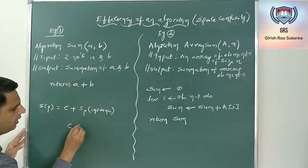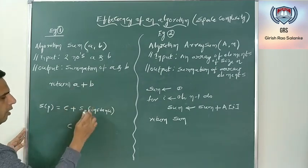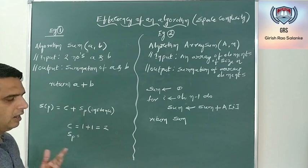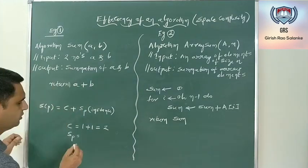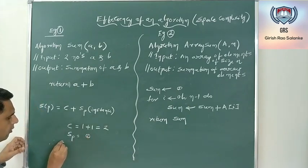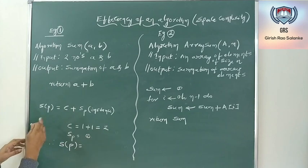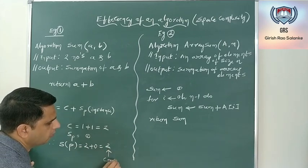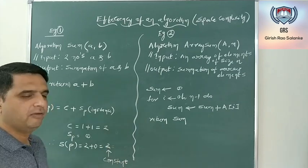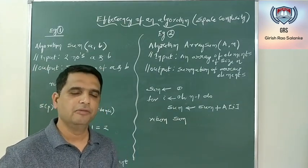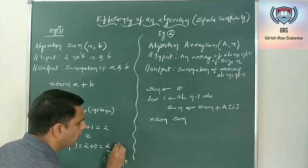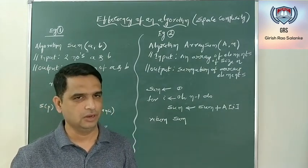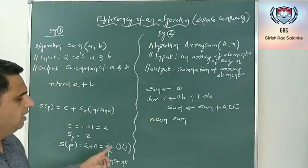Since A and B are both constants, C equals 1 plus 1: one unit to store the value of A and one unit to store the value of B, giving C = 2. There is no dependent part in the algorithm, so SP = 0. Therefore, the total space complexity is 2 + 0 = 2, which is a constant. When we discuss asymptotic notation in the next video, we will denote this constant as order of 1, so the space complexity of this algorithm is constant.